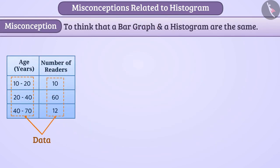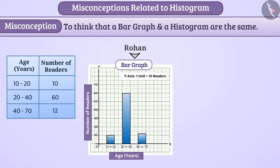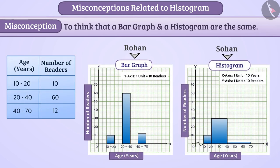The data shown here in this table show the number of readers of different age groups visiting the library of Rahul's village in March. Rohan represented this information as a bar graph and Sohan represented this information as a histogram. Can you find the difference between the two by looking at them?